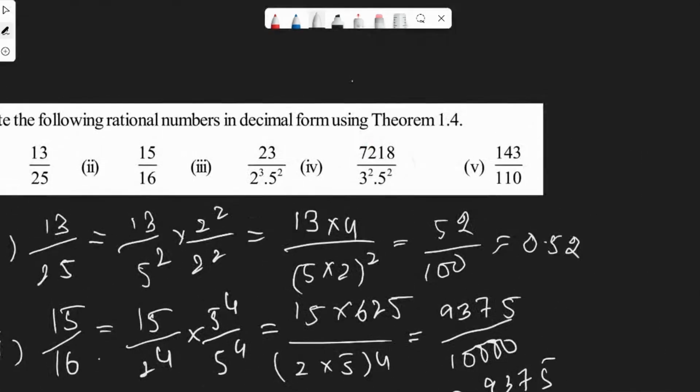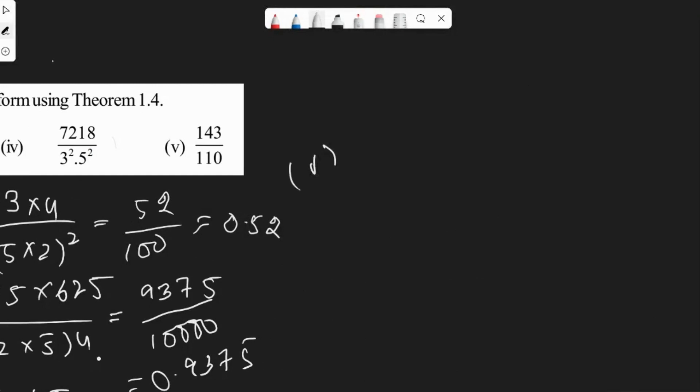Last one, fifth one: 143 by 110. We can write as 143 by 11 into 10. 143 is divisible by 11, which is 13. So 13 by 10 is actually 1.3. Thank you guys, I hope you understood it. Bye bye.